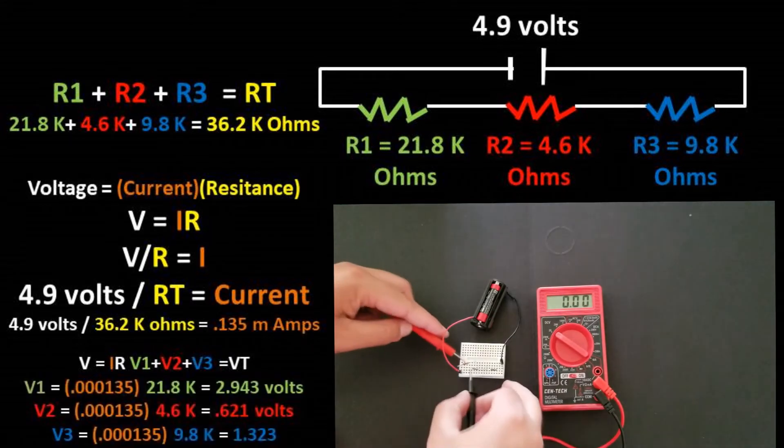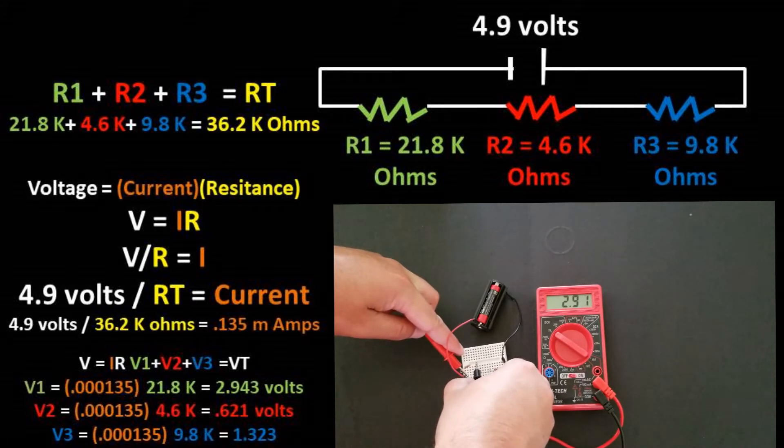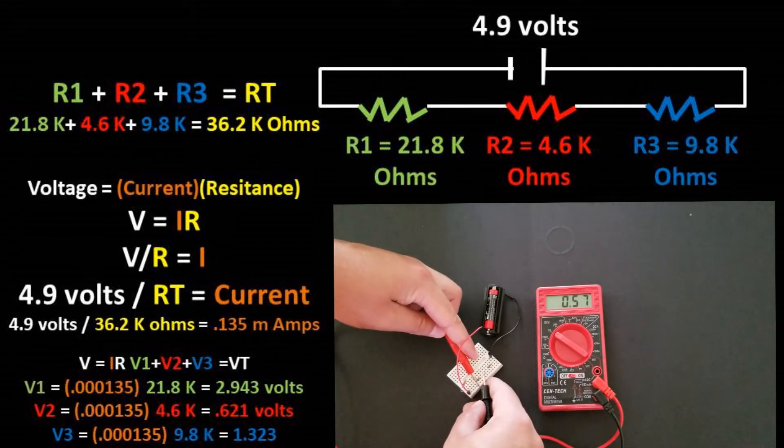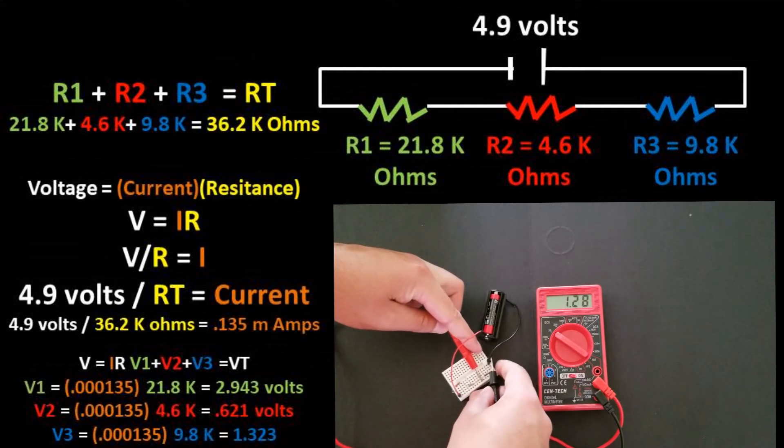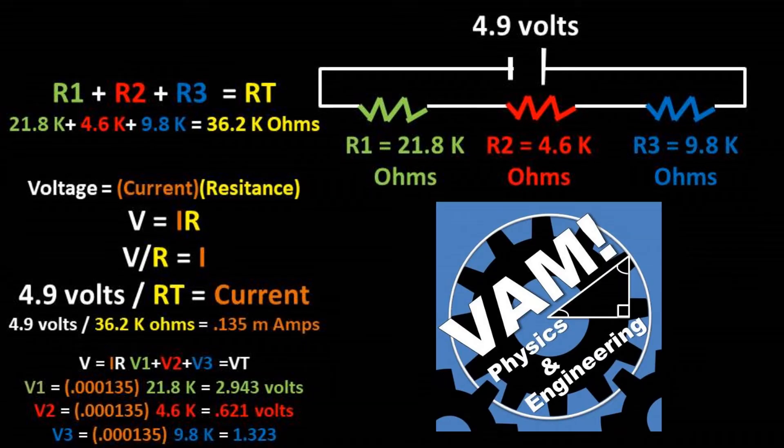We can now plug in the resistance and the total current that we found to find the voltage of each resistor. We get a voltage of resistor 1 of 2.943 volts, a voltage of resistor 2 of 0.621 volts, and a voltage of resistor 3 of 1.323 volts. This matches pretty closely to the experimental values we got using the multimeter. There might be some variance due to rounding.